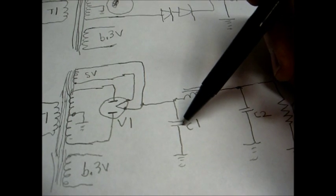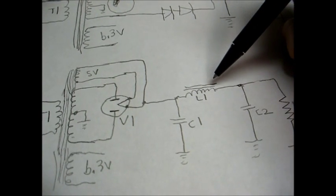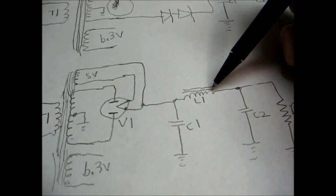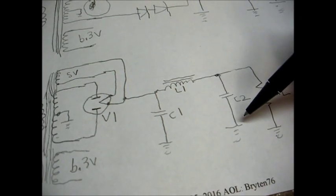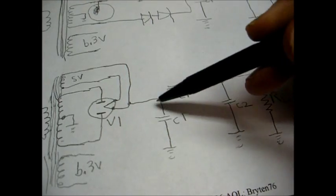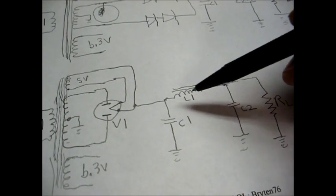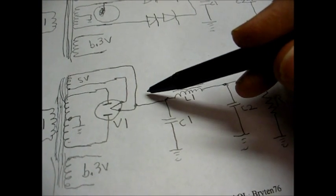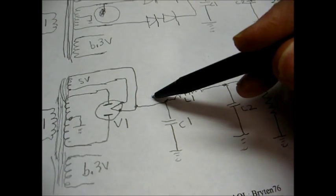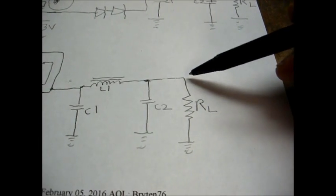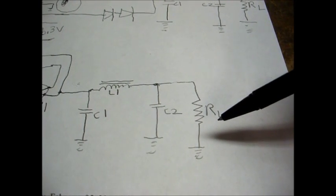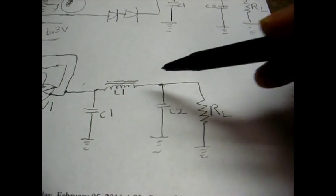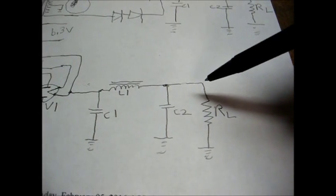Coming off of the filament here, we also have our rectified high DC voltage. Could be anywhere from 200 to 500, 600 volts, depending on the product. Here's our first filter capacitor, which is an electrolytic. And then we have our filter choke here. Sometimes there's a resistor here instead of a choke. And here's our second filter capacitor. These devices smooth out the 120 hertz ripple. And this RL is basically just the load of the radio or record player or whatever that this power supply is supplying power to.